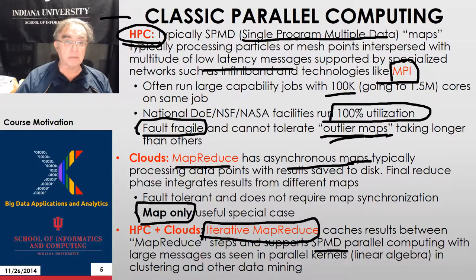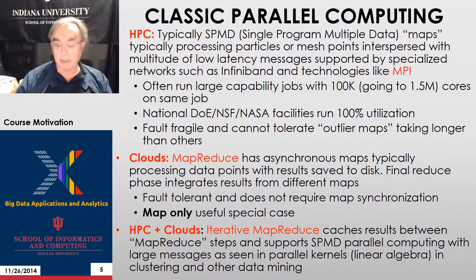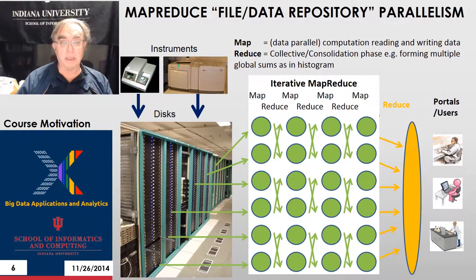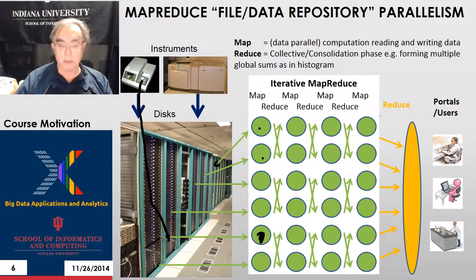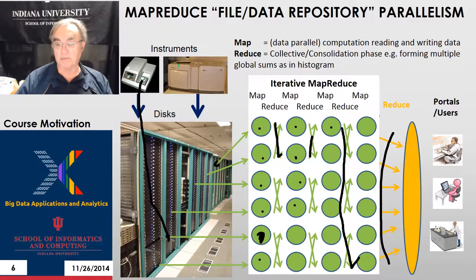Here is a nice picture of MapReduce. We have instruments producing data going to disks, which are then supported by computers doing the maps. We have one set of maps, then a reduce phase, another set of maps and reduce phase, another set of maps and reduce phase, and then the final reduction phase before the answer goes to users who make decisions.